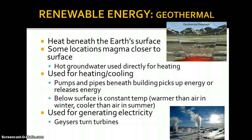Now, geothermal — we talked about this as one of the main energy sources for our planet. Geo means earth, thermal means heat, so geothermal energy is heat beneath the earth's surface. Some locations on our planet are closer to the magma, so any groundwater gets nice and hot. Hot groundwater can be used directly for heating — you can pipe that into your home through your hot water heater or along the floorboards. It's primarily used for heating and cooling. The pumps and pipes beneath buildings pick up or release energy. You don't have to be located near magma in order to benefit from geothermal.